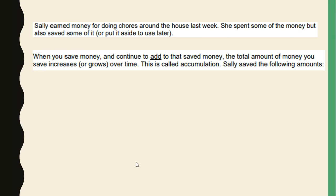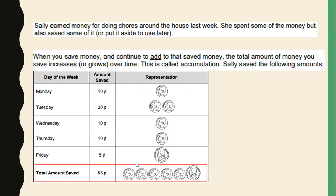Sally saved the following amounts: on Monday she saved 10 cents, on Tuesday she saved 20 cents, on Wednesday she saved 10 cents, on Thursday she saved 10 cents, and on Friday she saved 5 cents. So she accumulated a total amount saved of 55 cents for the week. Here is a number sentence representation of her savings. What do you notice?